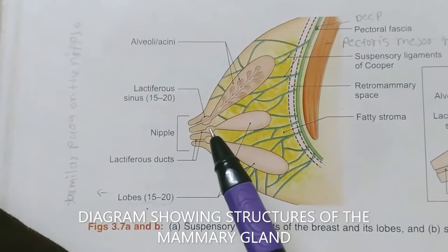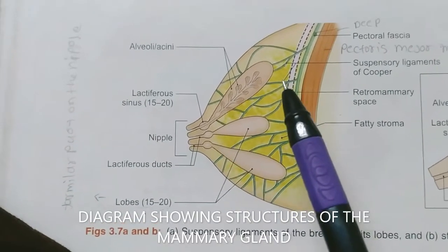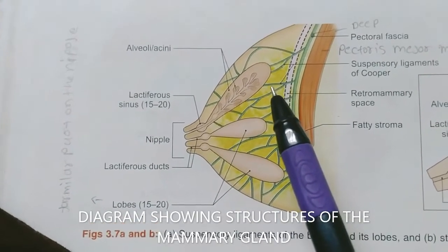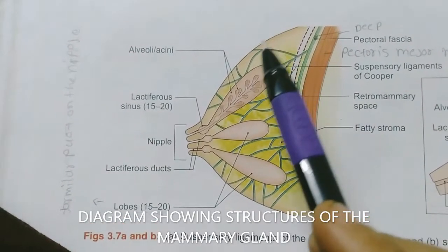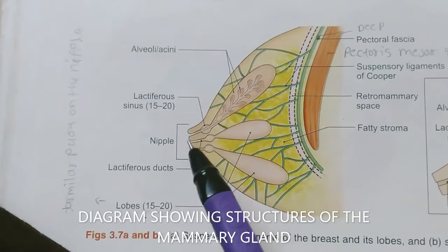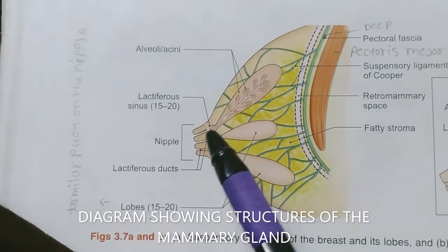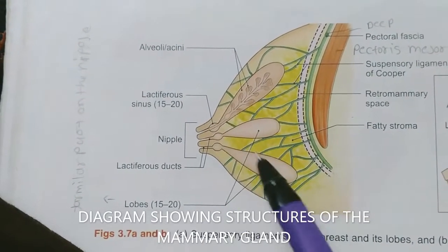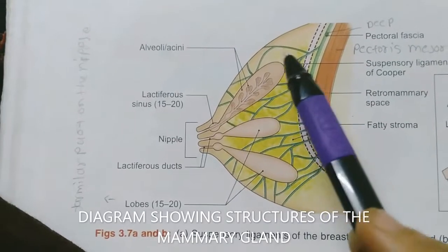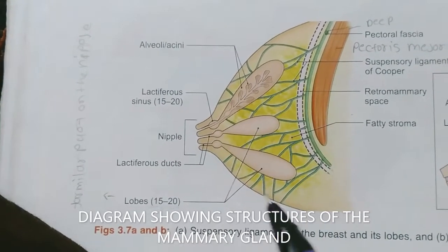This is the diagram of the structure of the breast. The breast is made up of three important structures: first is the skin, second is the parenchyma, and third is the stroma.